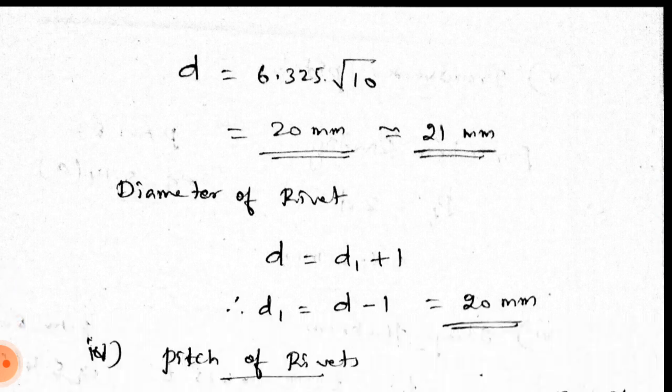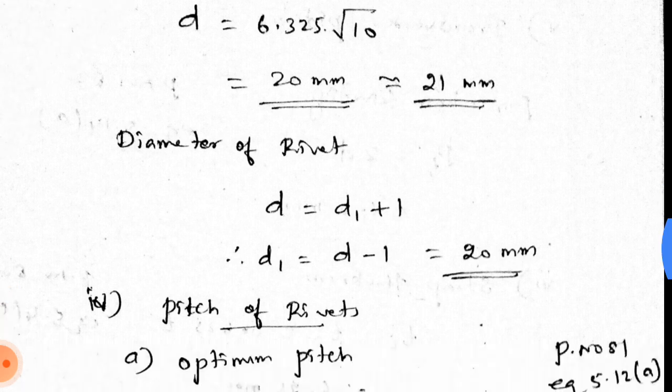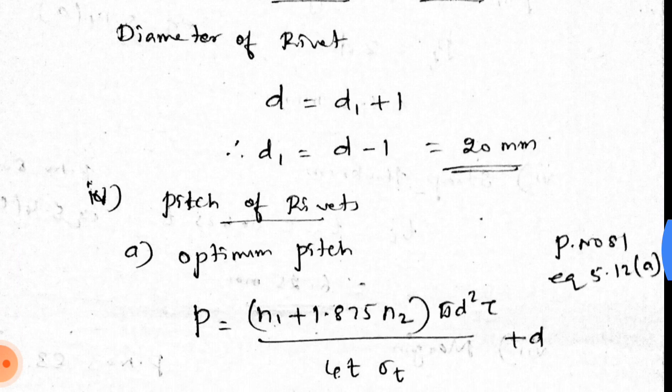Next, the diameter of the rivet. The diameter of the rivet hole equals the diameter of the rivet plus 1. Denoting rivet diameter as D1, we have D1 = D − 1 = 20 mm. This is the diameter of the rivet.